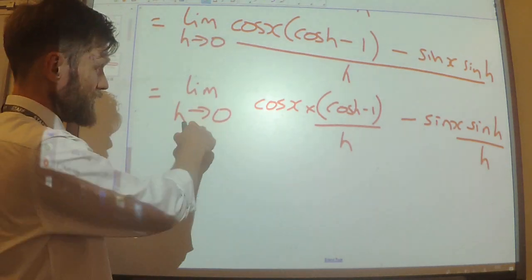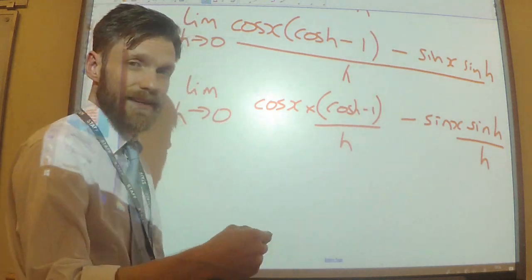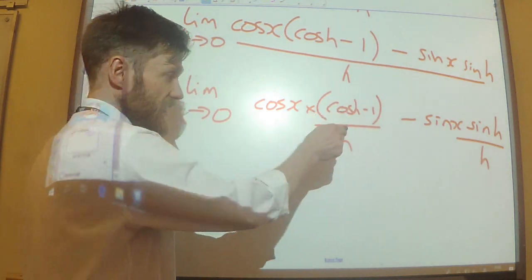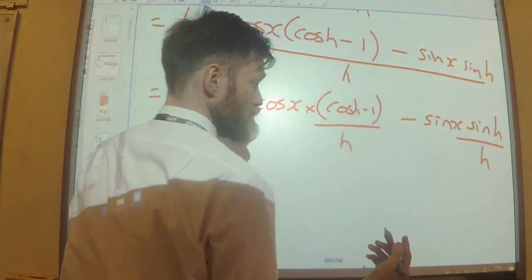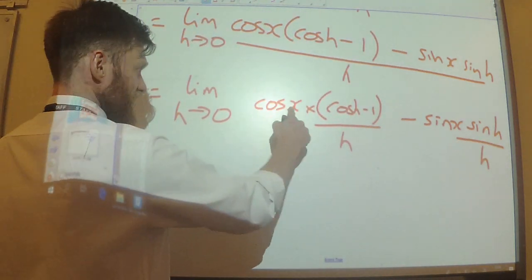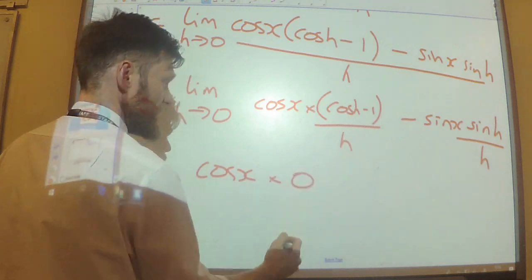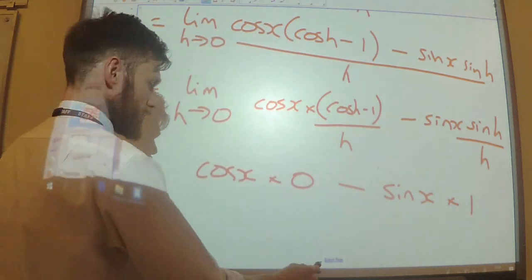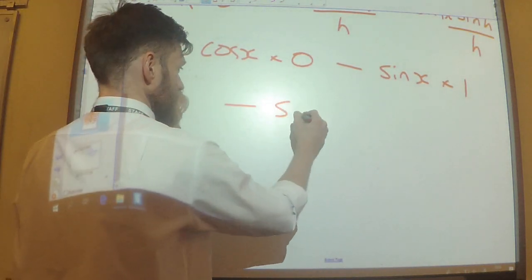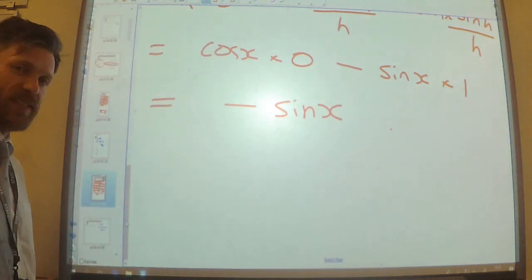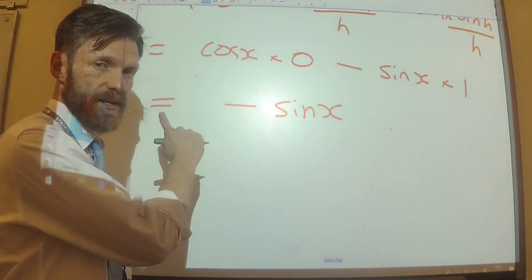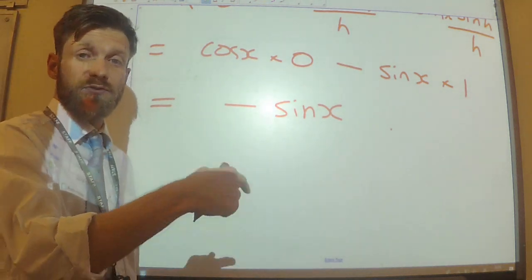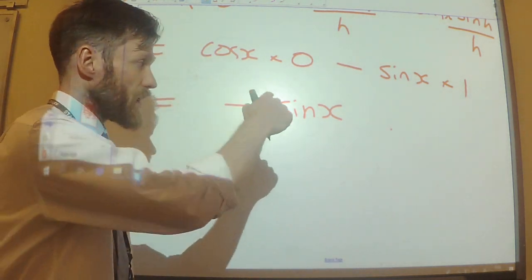Now I can apply the limit. Using the small angle approximations — or if we're told that (cos h minus 1)/h tends to 0 and sin h/h tends to 1 — I can then say cos x times 0 minus sin x times 1, which will just be minus sin x. So when we differentiate cos, we get minus sin. To summarise: sine differentiates to cos, cos differentiates to minus sin.